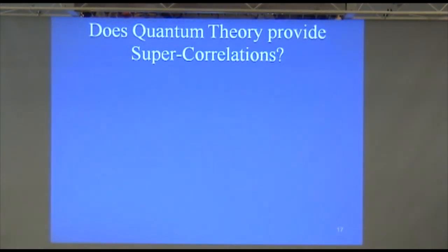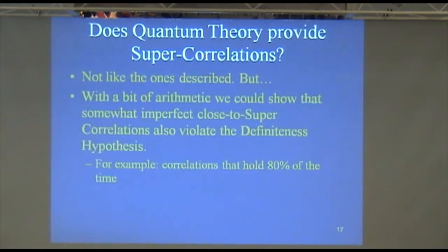So, quantum theory doesn't predict super correlations, but it predicts something close. What we can show is that you get correlations in quantum mechanics that aren't 100% for a case like this. But they can be as high as about 80%. That 80% of the time, if they do the A0, B0 case, they get the same result. 80% of the time if it's A0, B1, they get the same result. And so on. And then a little bit of arithmetic that I'm not going to go through shows you that the probabilities would end up adding up to more than 100%. So we would get a contradiction once again.